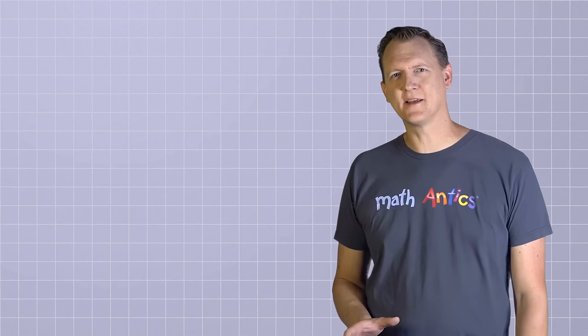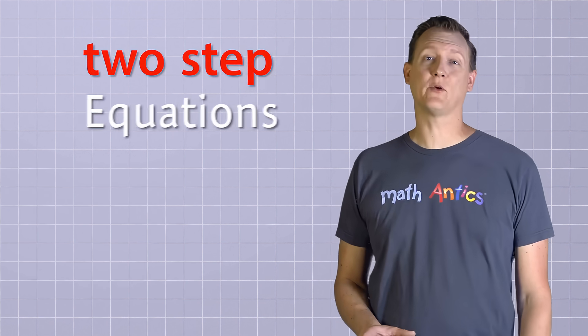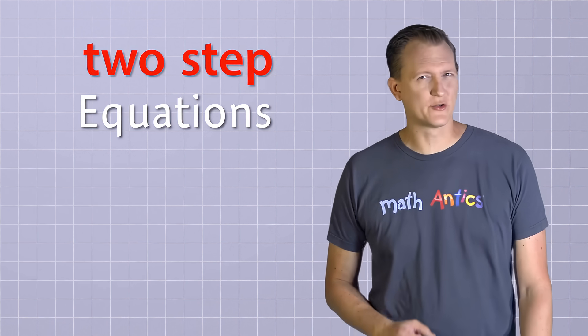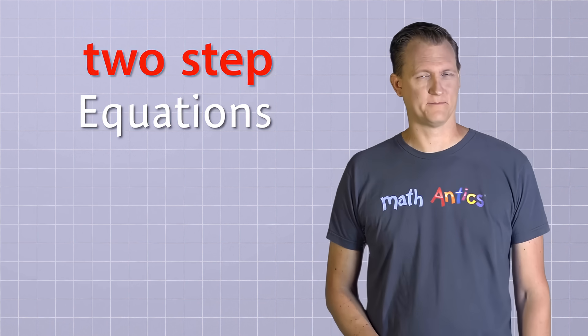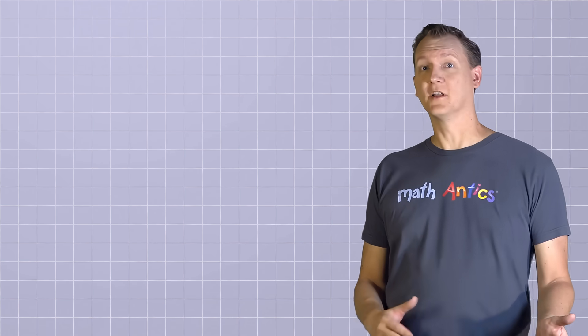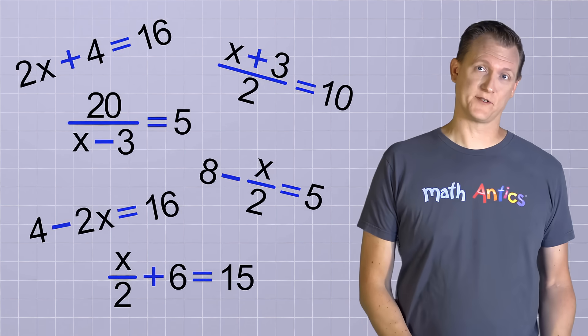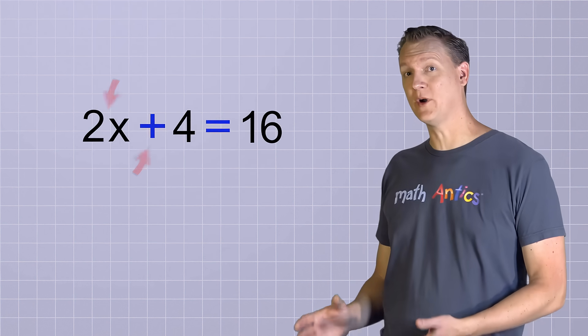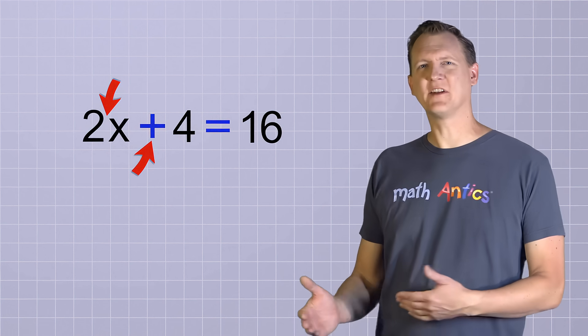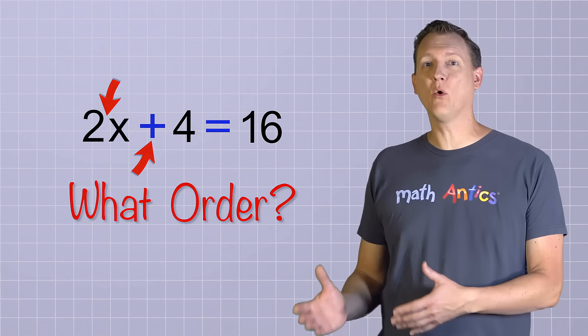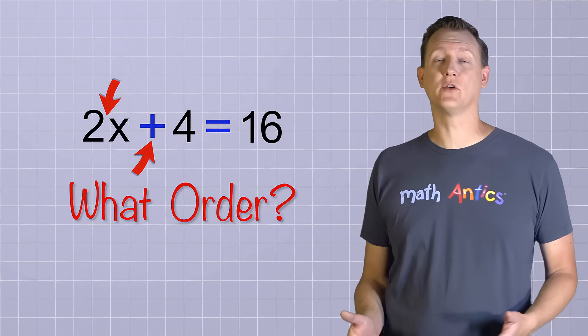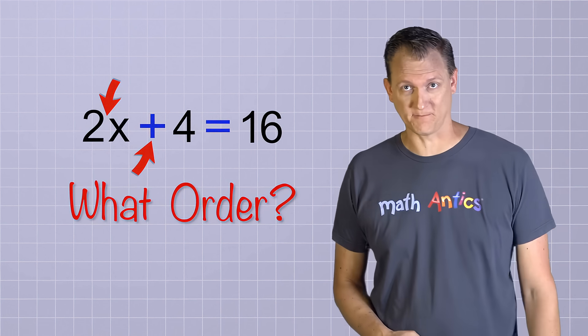And that's true, but there's a couple of reasons that make two-step equations a little trickier to solve. The first is that there's a lot more possible combinations of those two operations. And the second is that when there's more than one operation, you have to decide what order to undo those operations in.